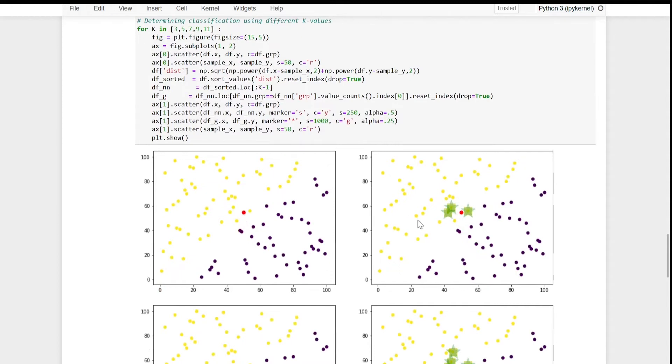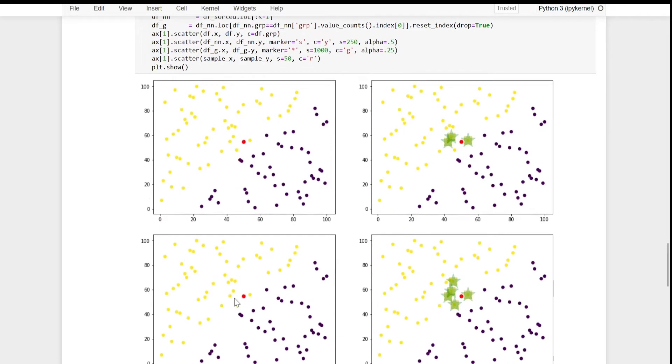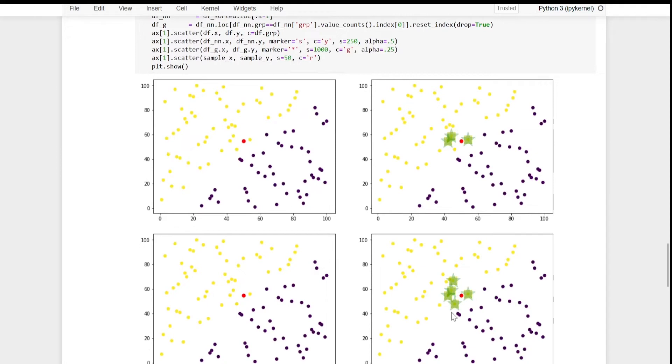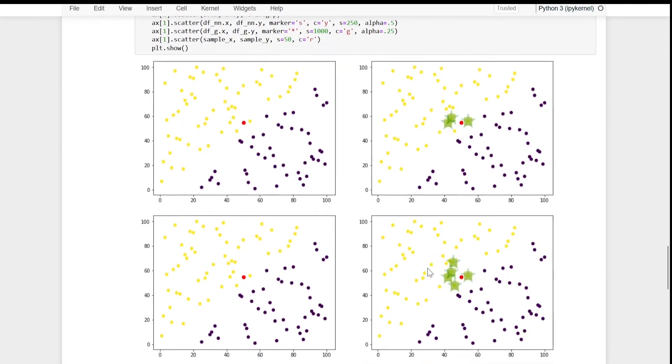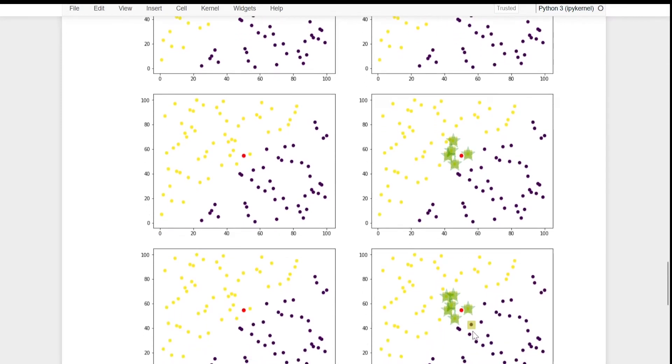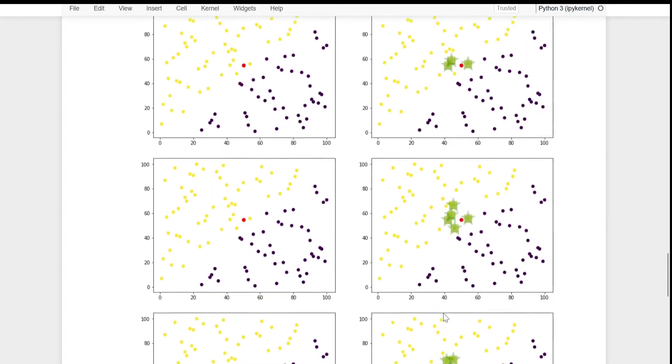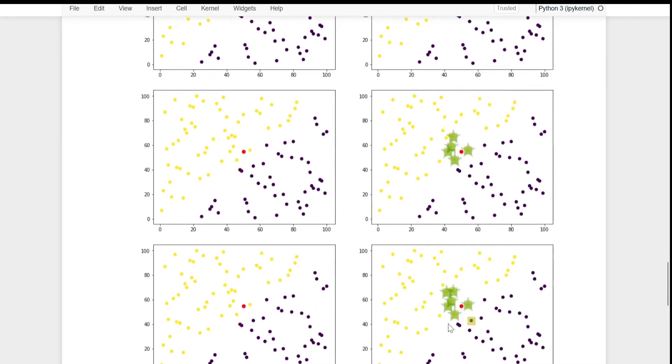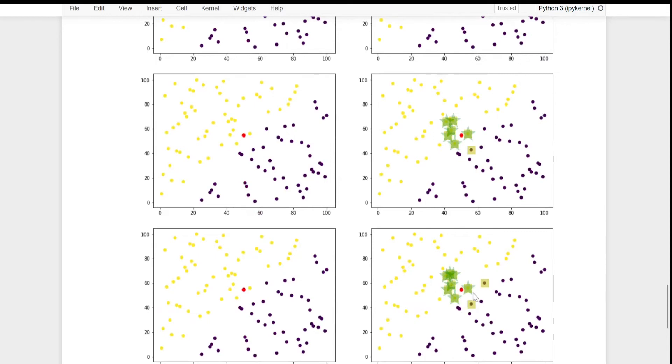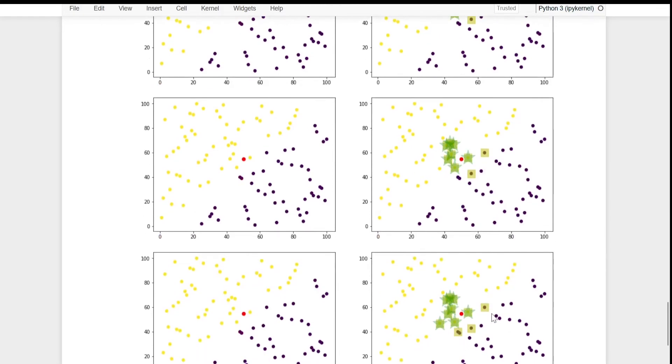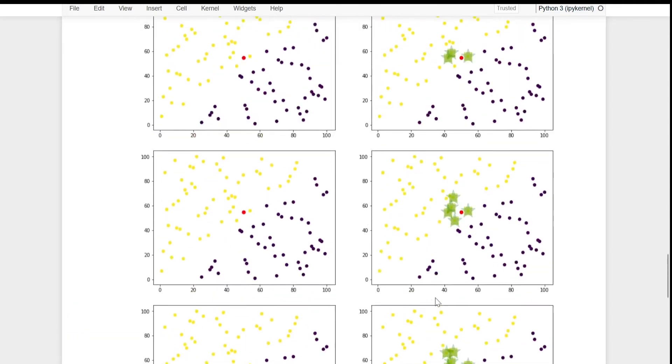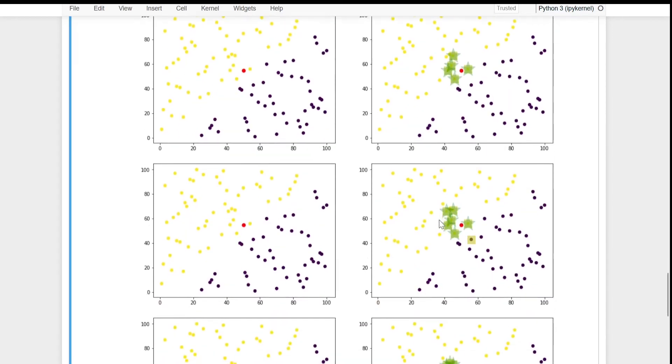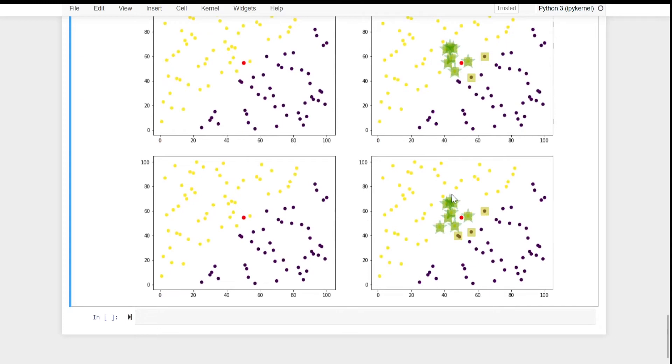Okay. So, 3 neighbors, all from yellow group. When we are increasing neighbors as 5, still yellow. We will make it 7. Only 1 from brown, 6 from yellow. So what will happen in majority voting? Our test data point will be considered to be belonging to yellow. Here also yellow. Here also yellow. Then, now this time, 9. Still yellow. Why? Because there are only 2 from brown. Then what happens here? Only 3 from brown, again yellow. So, whether it was 3 neighbors, 5 neighbors, 7 neighbors, 9 neighbors, 11 neighbors, every time our yellow group, won over brown group.